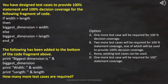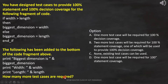Here the question is: you have designed test cases to provide 100% statement and 100% decision coverage for the following fragment of code. That means for this code, test cases are available and they cover 100% statement coverage and decision coverage. To this code, the following has been added to the bottom of the code fragment. Now we have to find how many more test cases are required.